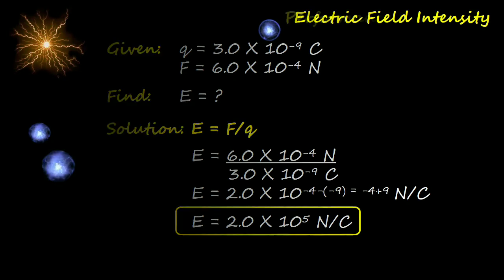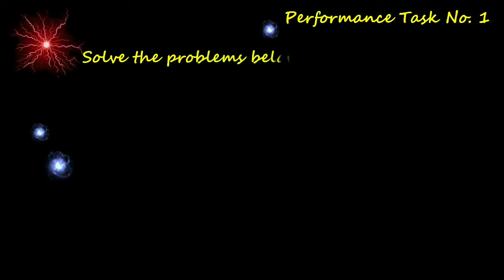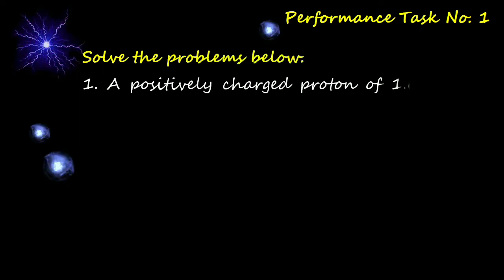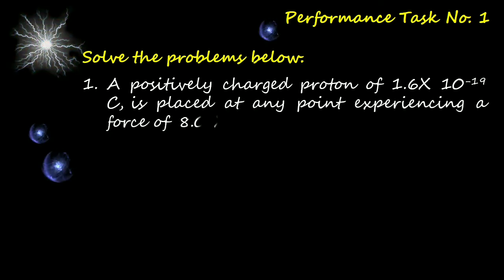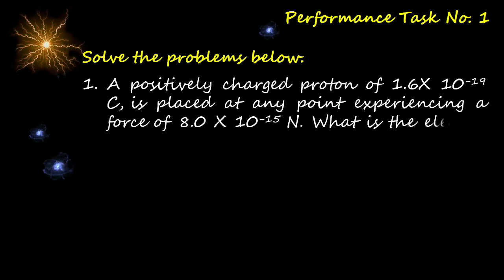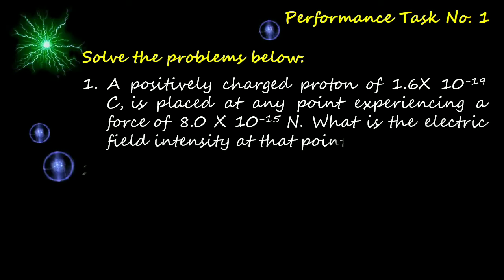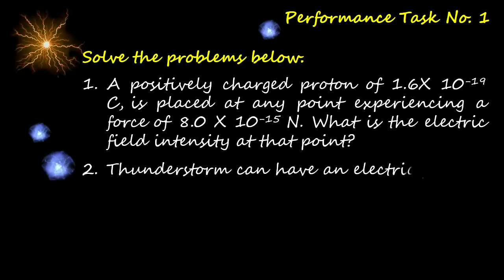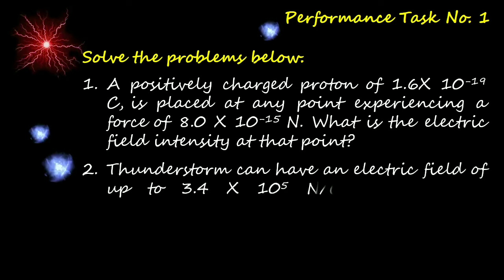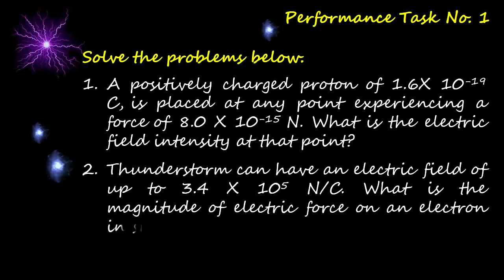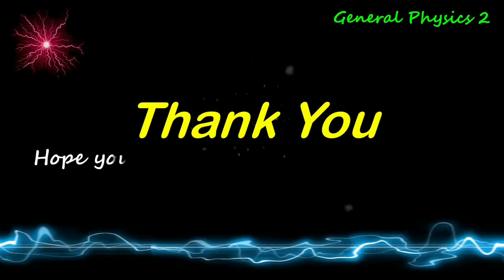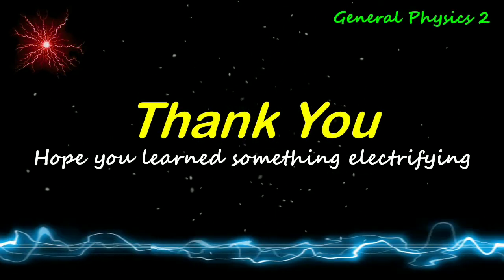As your first performance task, solve the problems below. Number one: a positively charged proton of 1.6 × 10⁻¹⁹ C is placed at a point experiencing a force of 8.0 × 10⁻¹⁵ N — what is the electric field intensity at that point? Number two: a thunderstorm can have an electric field of up to 3.4 × 10⁵ N/C — what is the magnitude of electric force on an electron in such a field? Thank you — hope you learned something electrifying, yet worthy and meaningful.